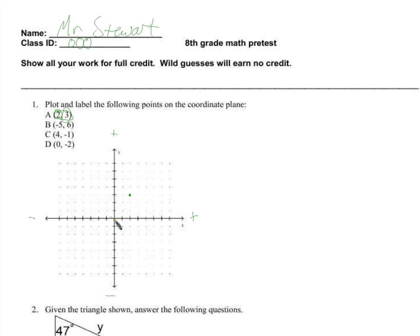Negative 5, 6. So the x is negative 5, so we come out to here. And the y is 6, so that would go to right there. Oh actually, I counted it wrong. That would be negative 5, 5. This is negative 5, 6. So this would be A and this would be B.